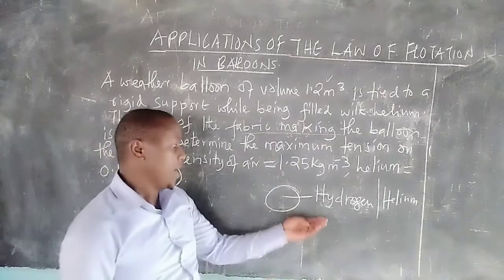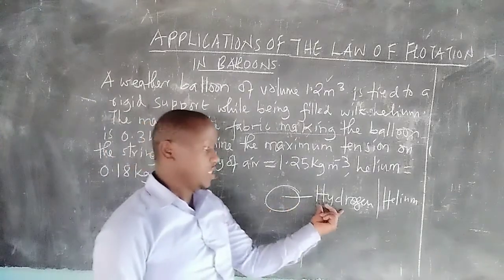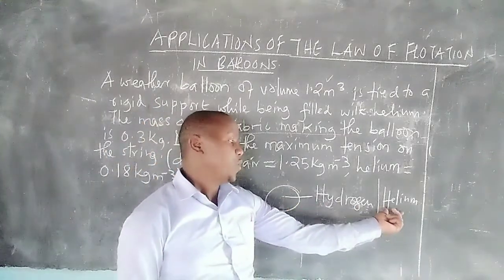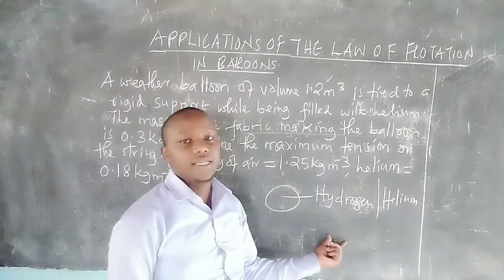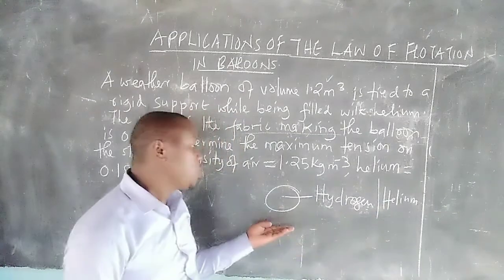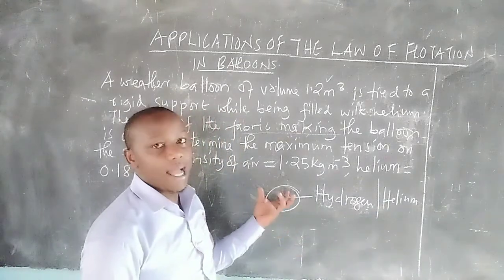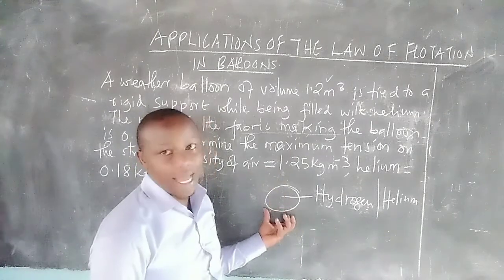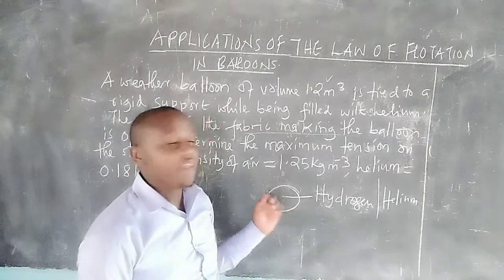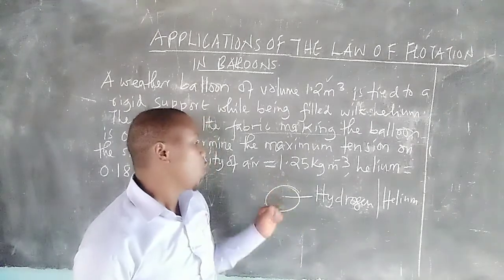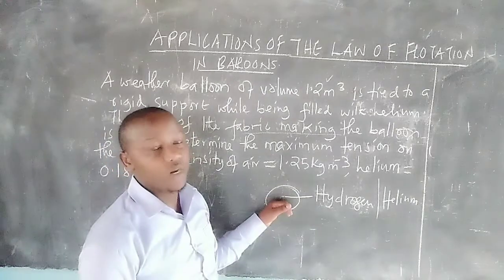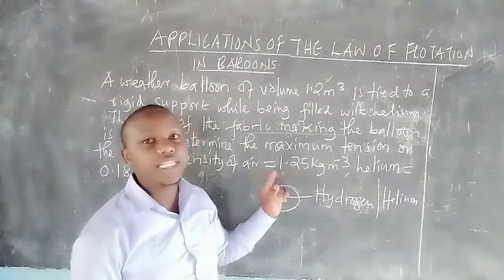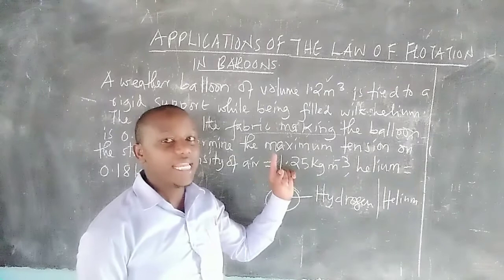When a balloon is filled with hydrogen or helium, which have a very low density, this balloon is able to float in air because the balloon displaces air, and that air causes an upthrust force on the balloon. It is due to this upthrust force that the balloon is able to fly in air.